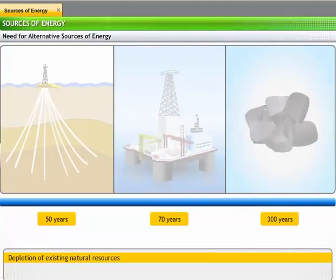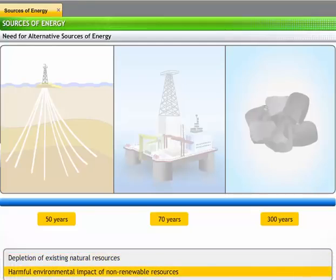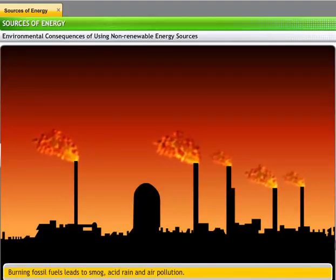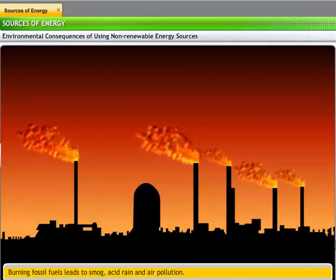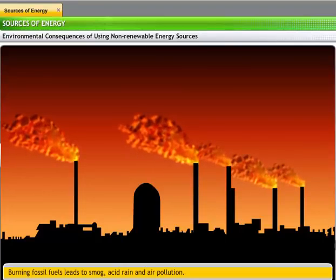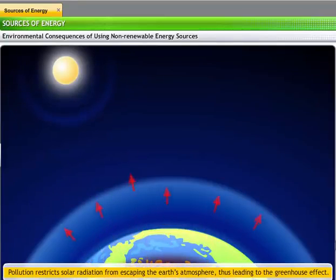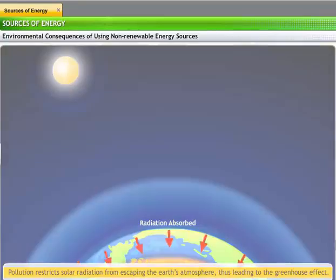All this is leading to an inevitable energy crunch. Additionally, there are many environmental consequences of using non-renewable sources for generating energy. Burning fossil fuels leads to smog, acid rain and air pollution. Air pollution restricts solar radiation from escaping the Earth's atmosphere. This leads to the greenhouse effect.